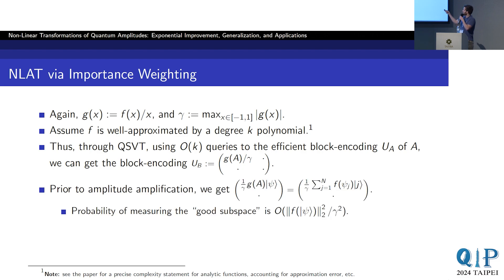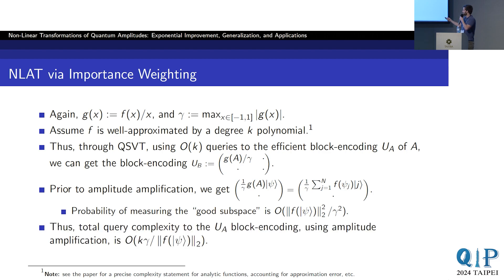Through QSVT, using k queries, you can get an efficient block encoding of this object. When you apply this to the quantum state, you get a state where in some subspace you have the state you'd like to obtain, so you need to amplify it. You measure the zero state of the ancilla with probability given by this expression. With amplitude amplification, your complexity is the inverse of that times the degree of the polynomial. This is the query complexity to your initial block encoding, which we showed is efficient to produce.